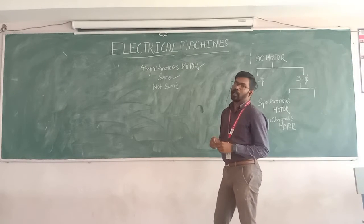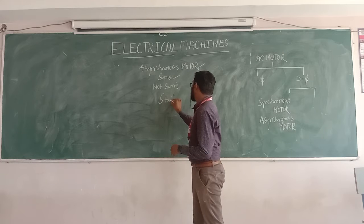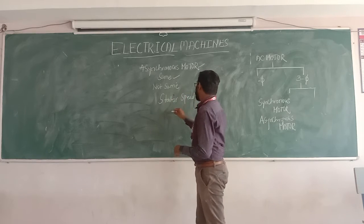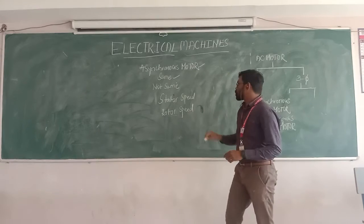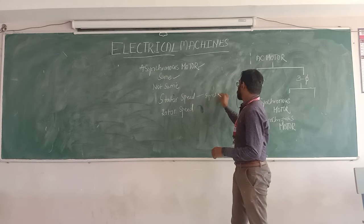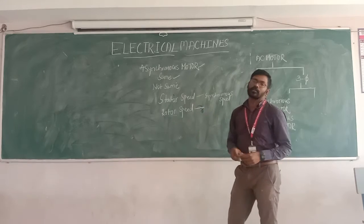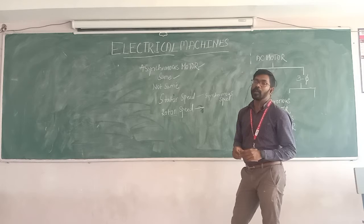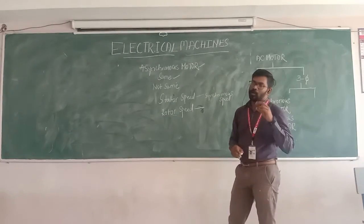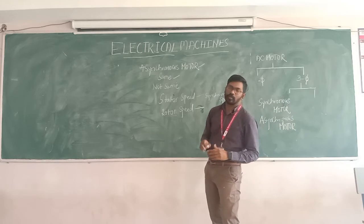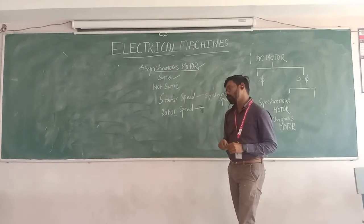If the speeds are not the same, then it is called an asynchronous motor. The stator speed is not the same as the rotor speed. The stator runs at synchronous speed, but the rotor does not rotate at synchronous speed — it is slightly less than the synchronous speed, and the rotor always tries to catch the speed of the stator. Since these two speeds are not the same, this machine is called an asynchronous motor or asynchronous machine.